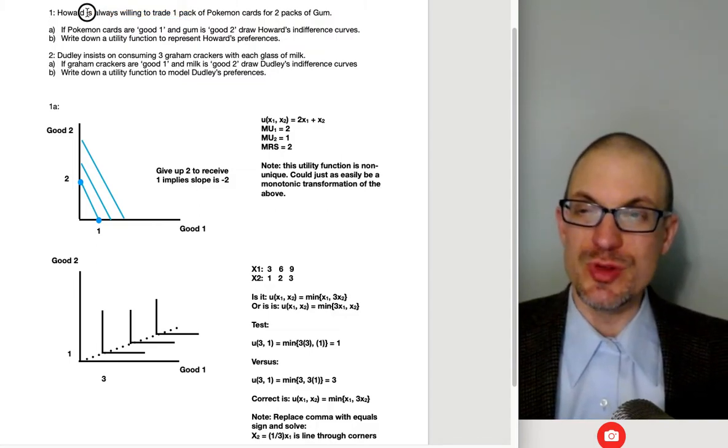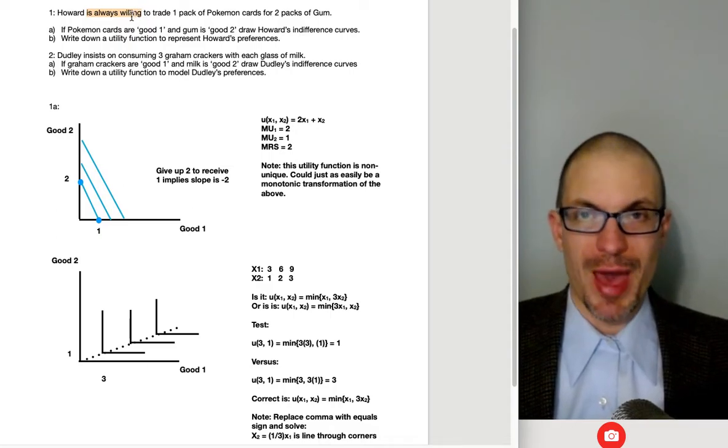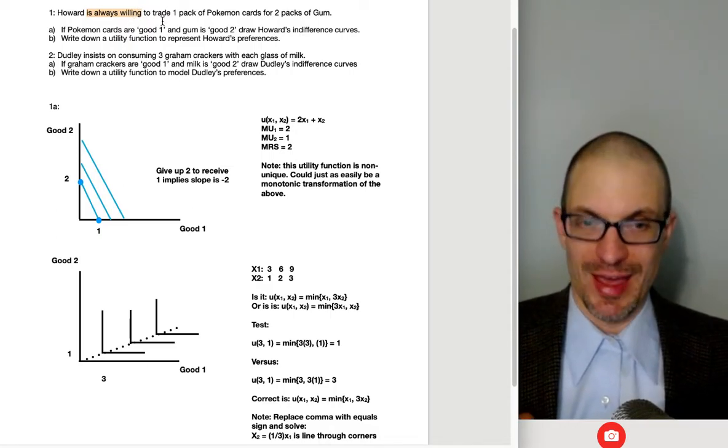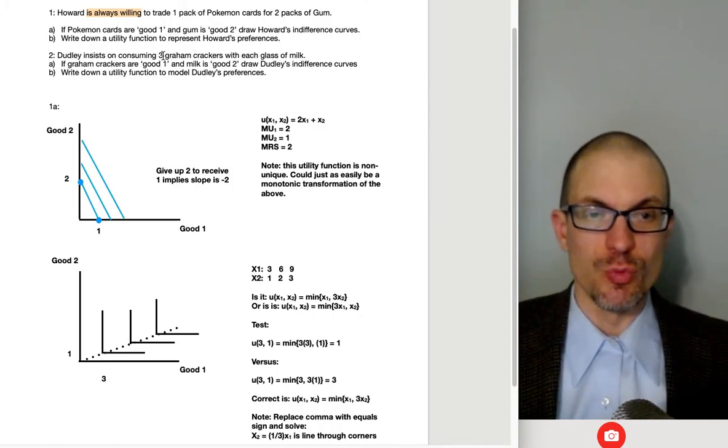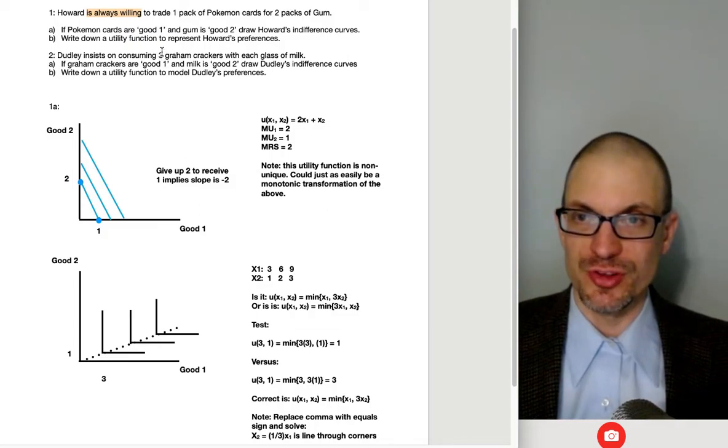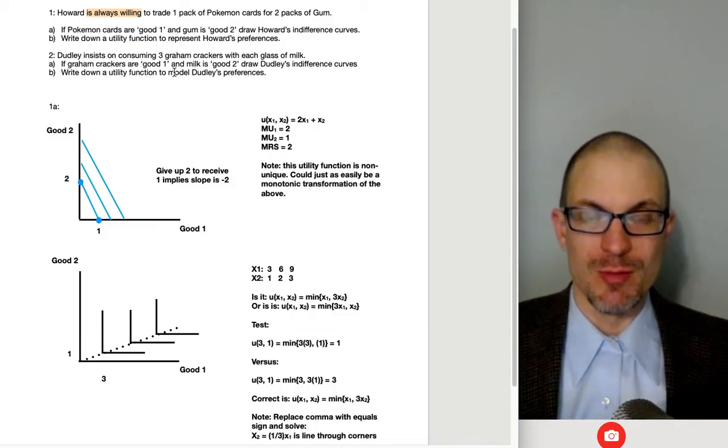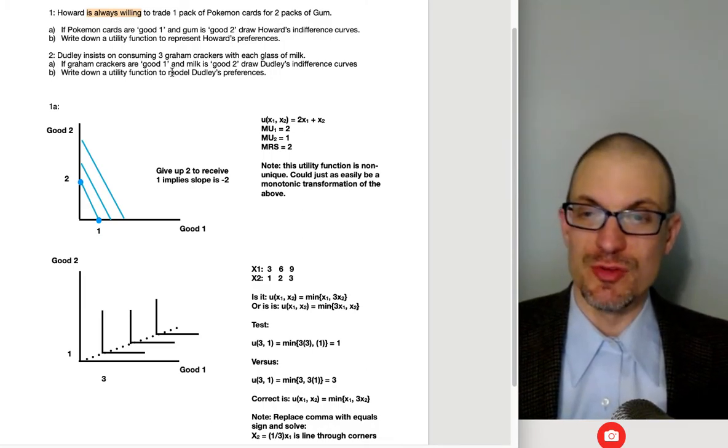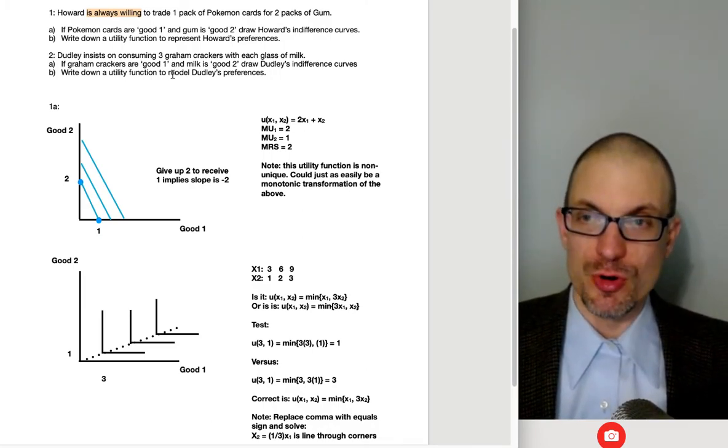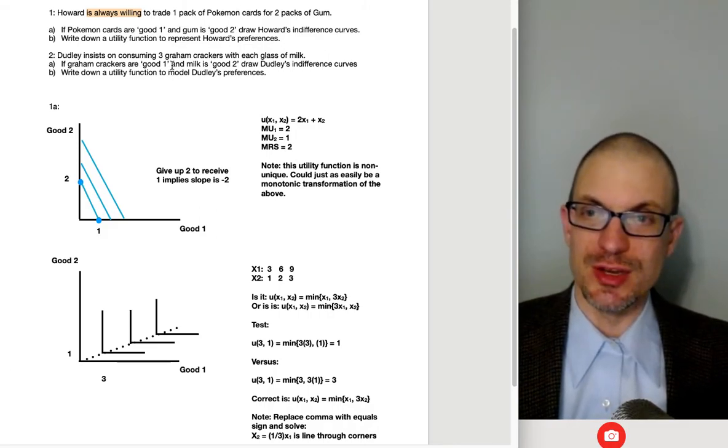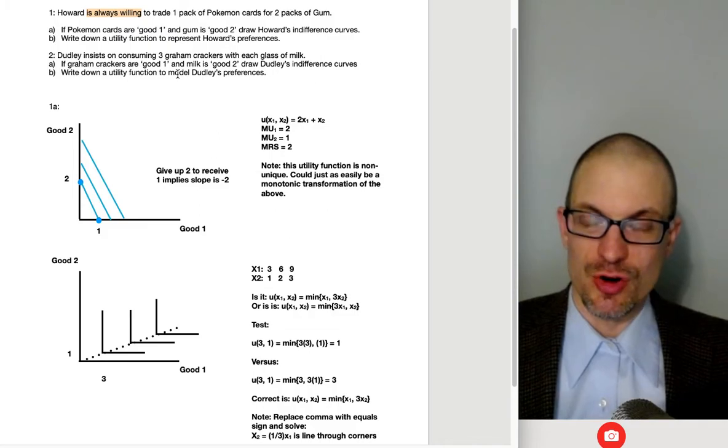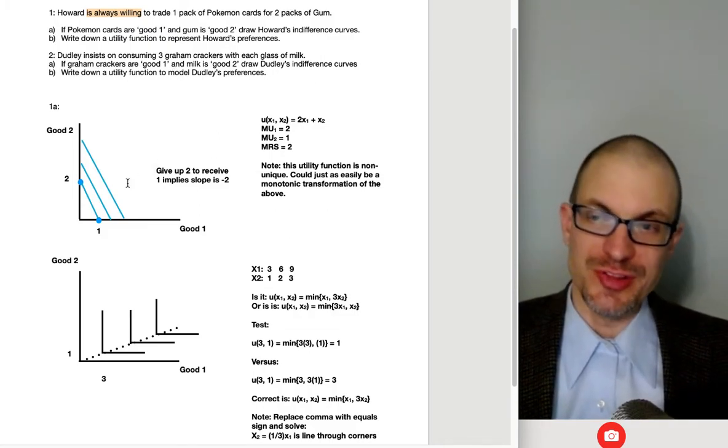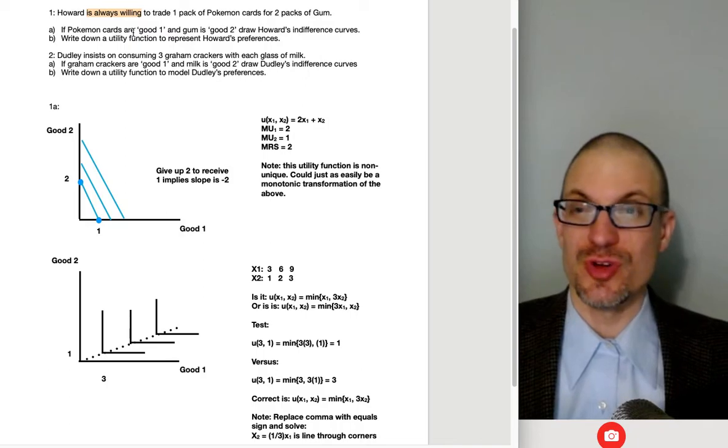And in particular, when I read this, one of the big things this is picking up on is it doesn't matter how many of either I have at the present time. I'm always willing to trade off at this rate. That's very different from like our standard well-behaved or like Cobb-Douglas preferences, where your marginal rate of substitution is going to depend on how much of the good that you have. Well, that's not relevant here. You're always willing to trade one for two.